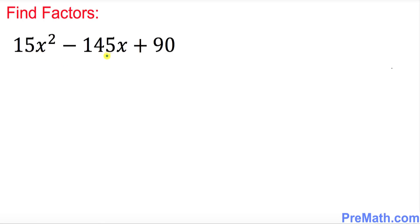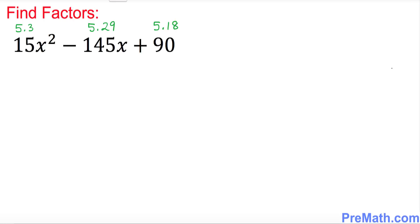Let's go over these numbers first. As you can see, 5 is common among all three terms. That means 15 could be written as 5 times 3, 145 could be written as 5 times 29, and 90 could be written as 5 times 18.